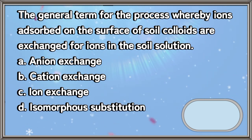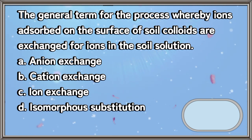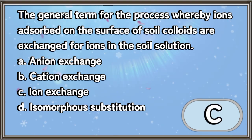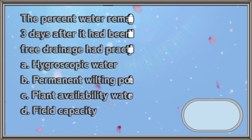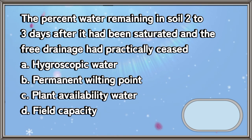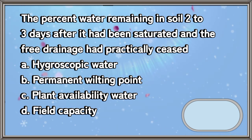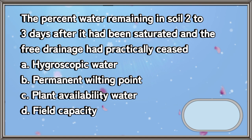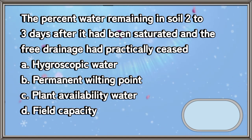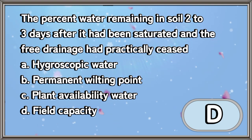The percent water remaining in soil two to three days after it had been saturated and the free drainage had practically ceased. A. Hygroscopic water. B. Permanent wilting point. C. Plant availability water. D. Field capacity. The answer is letter D.